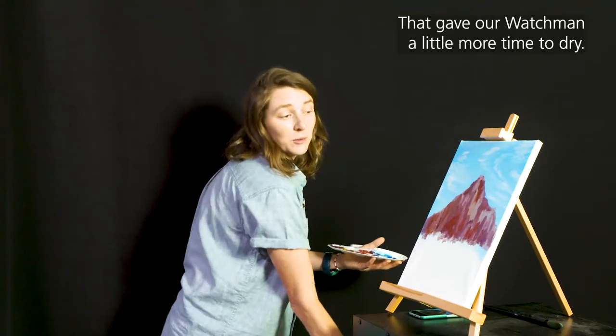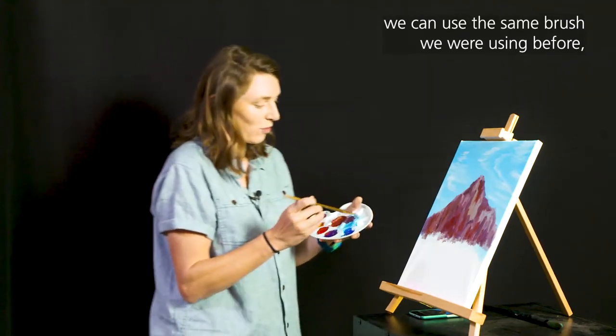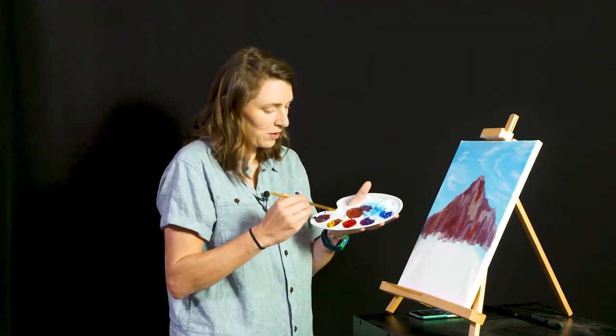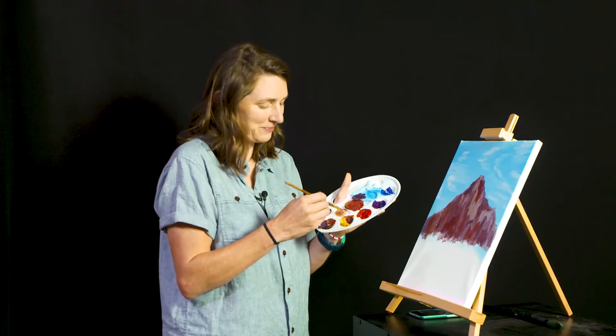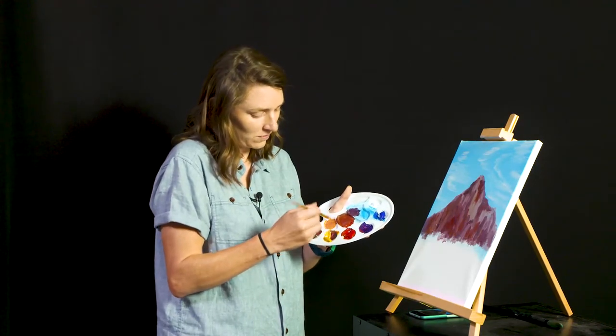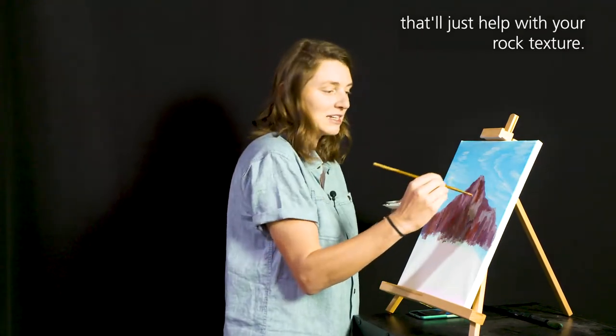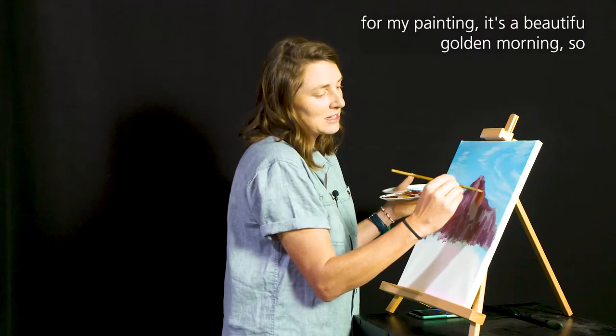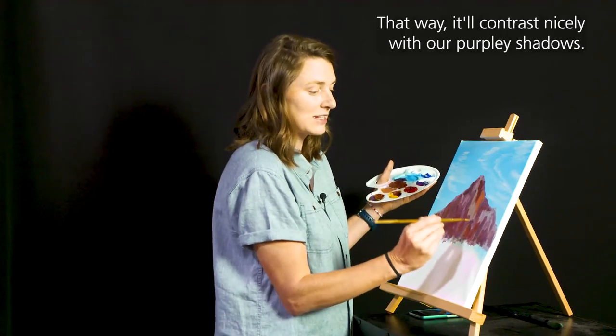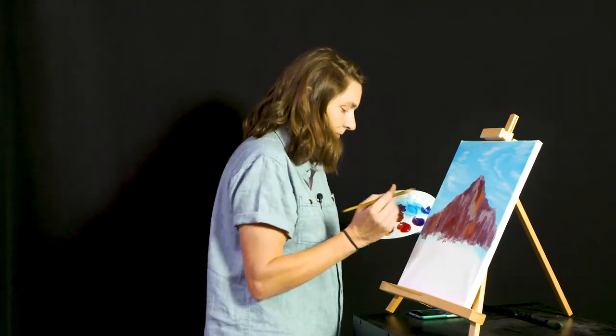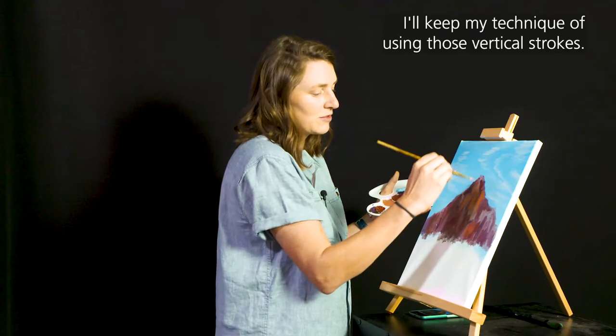That gave our Watchman a little bit more time to dry. So that way we can use the same brush we were using before to mix some white together with some of that gold color and some of that red to create some more highlights. And again, it's okay if it's a little bit streaky when you apply it. That'll just help with your rock texture. For my painting, it's a beautiful golden morning. So I want to keep that gold color really present. That way it'll contrast nicely with our purple shadows. And I keep my technique of using those vertical strokes.